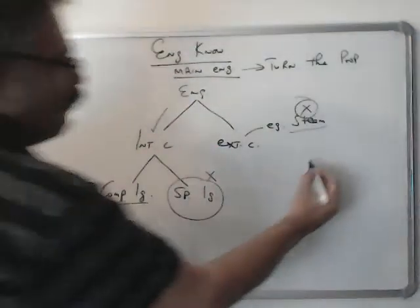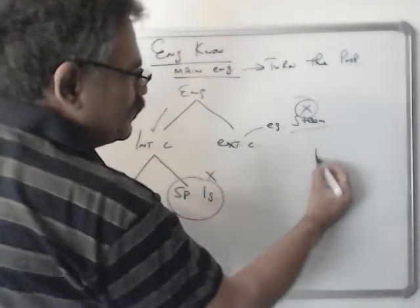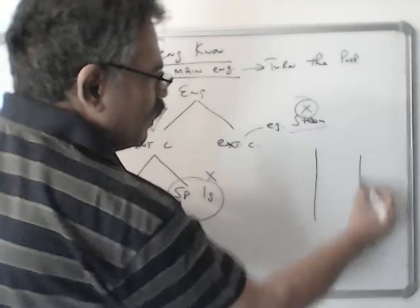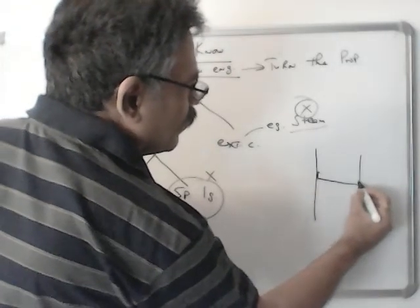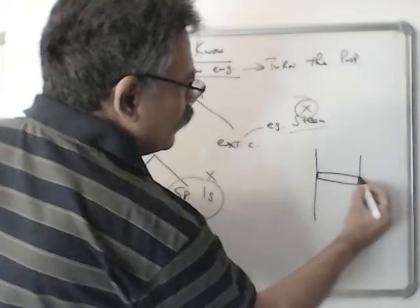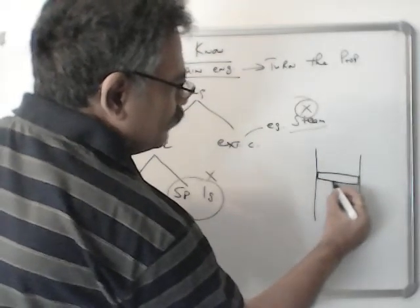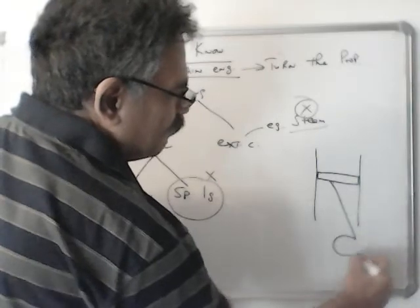So there is a cylinder and a piston. The piston has got a connecting rod connected to the crankshaft.